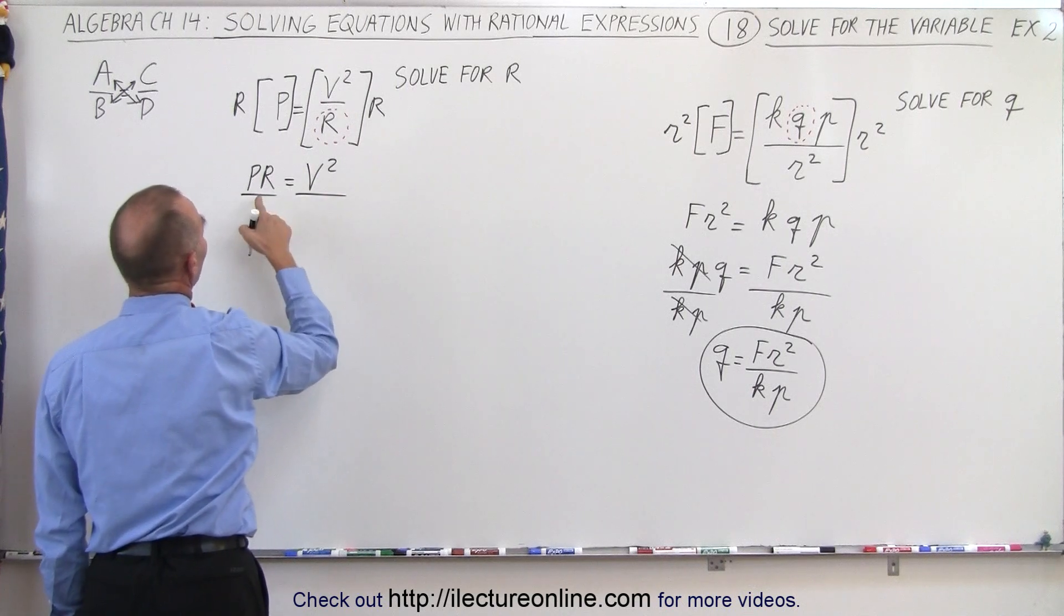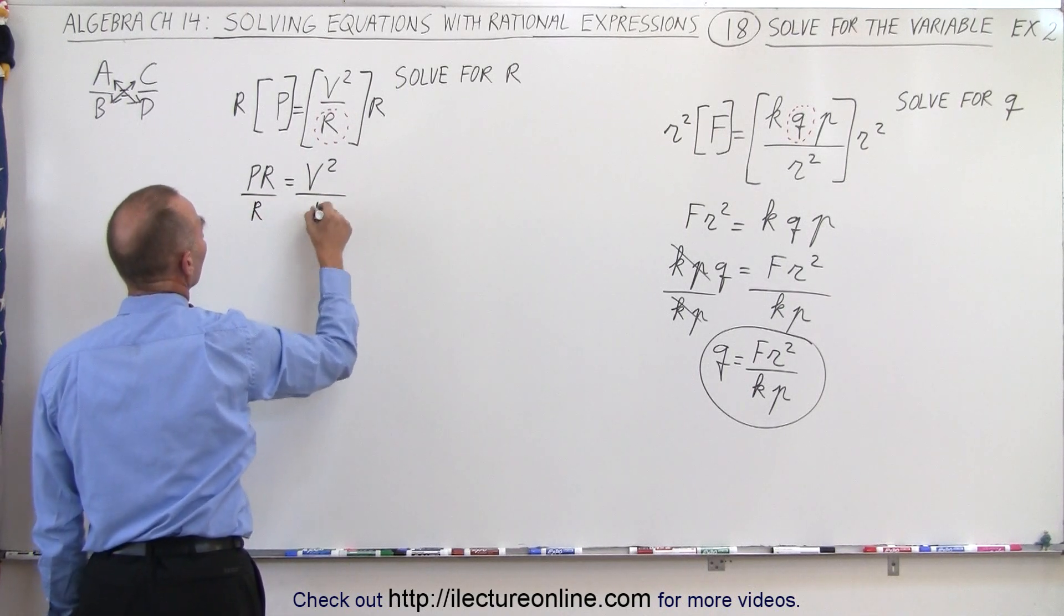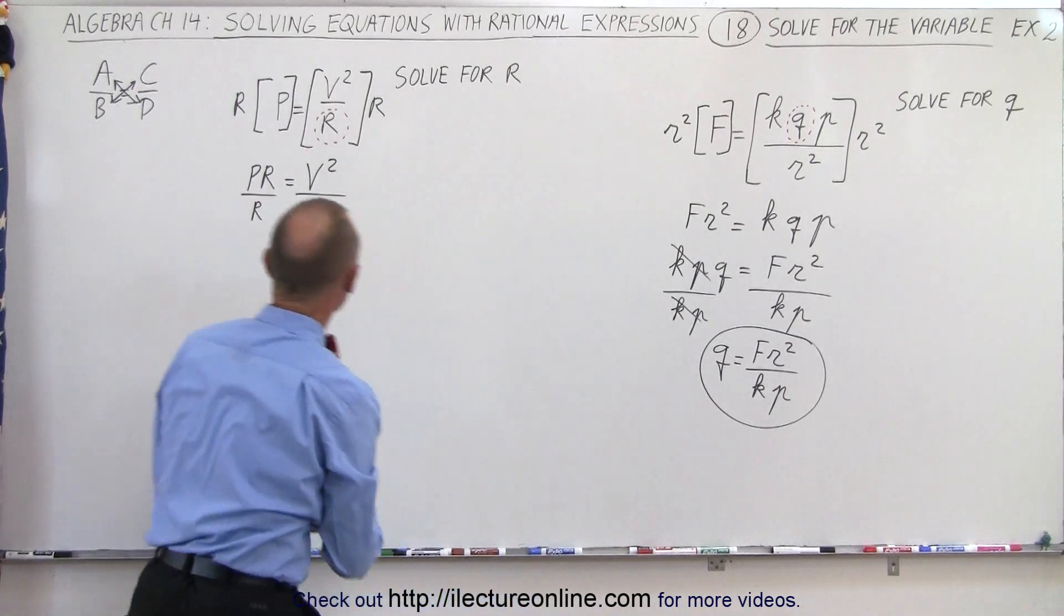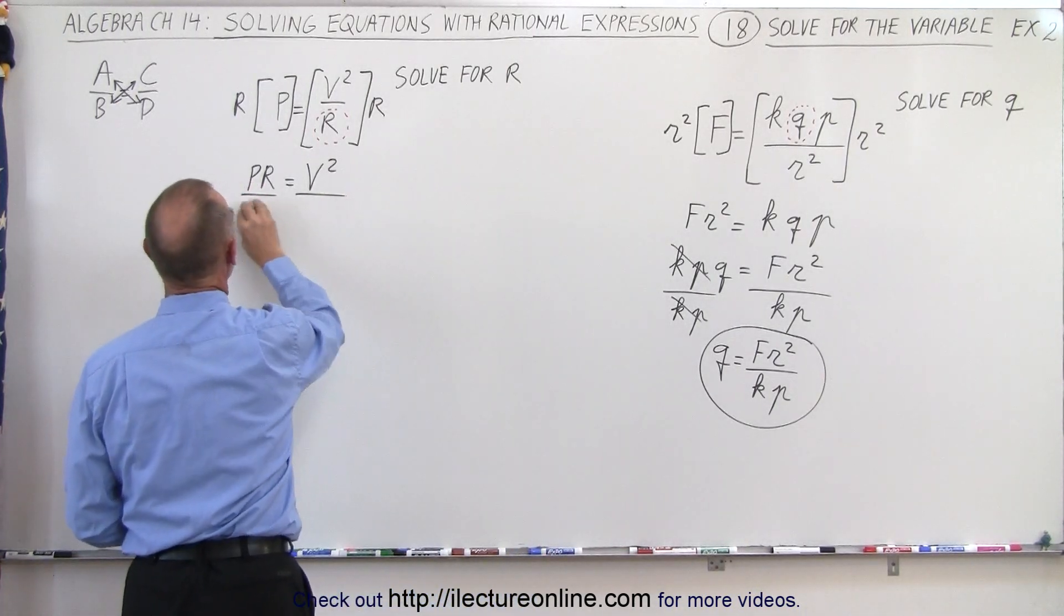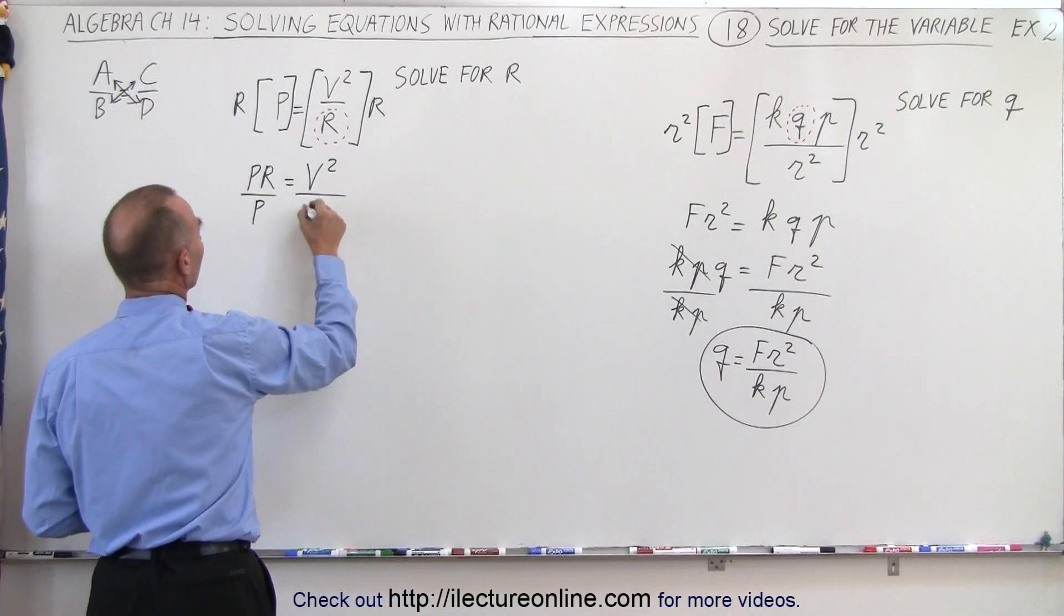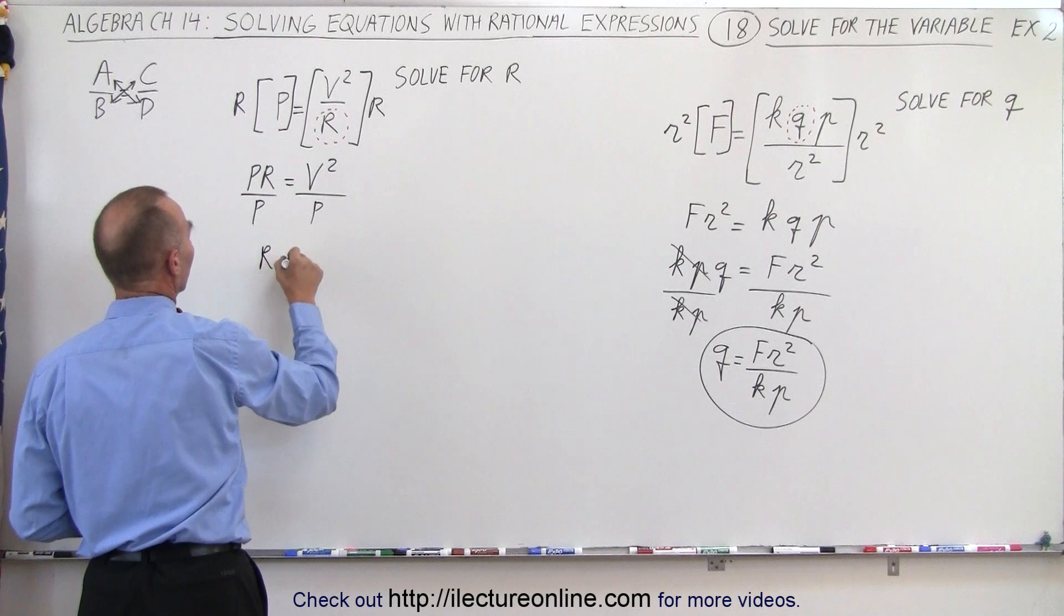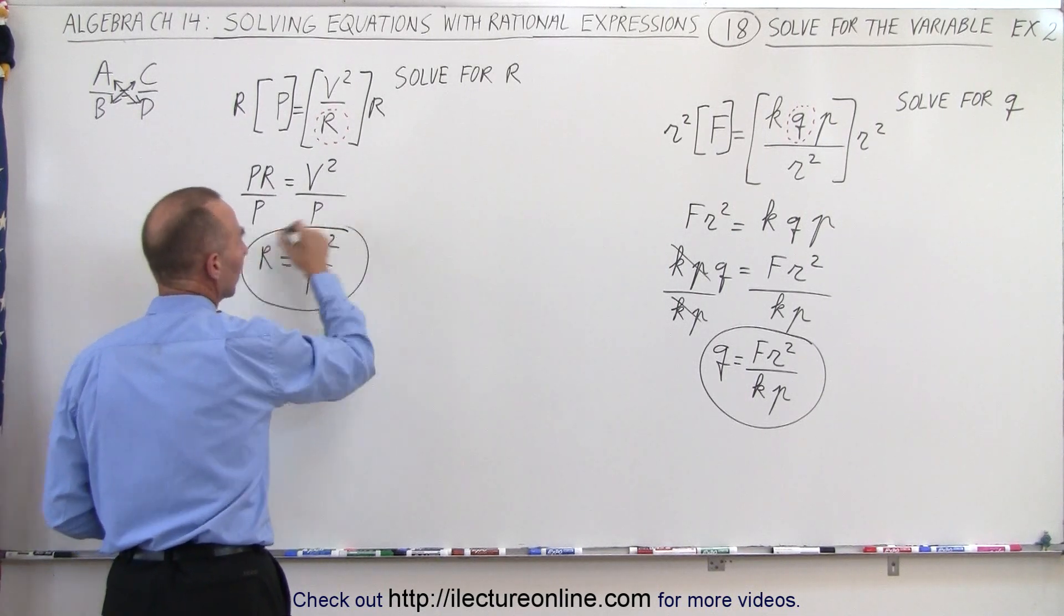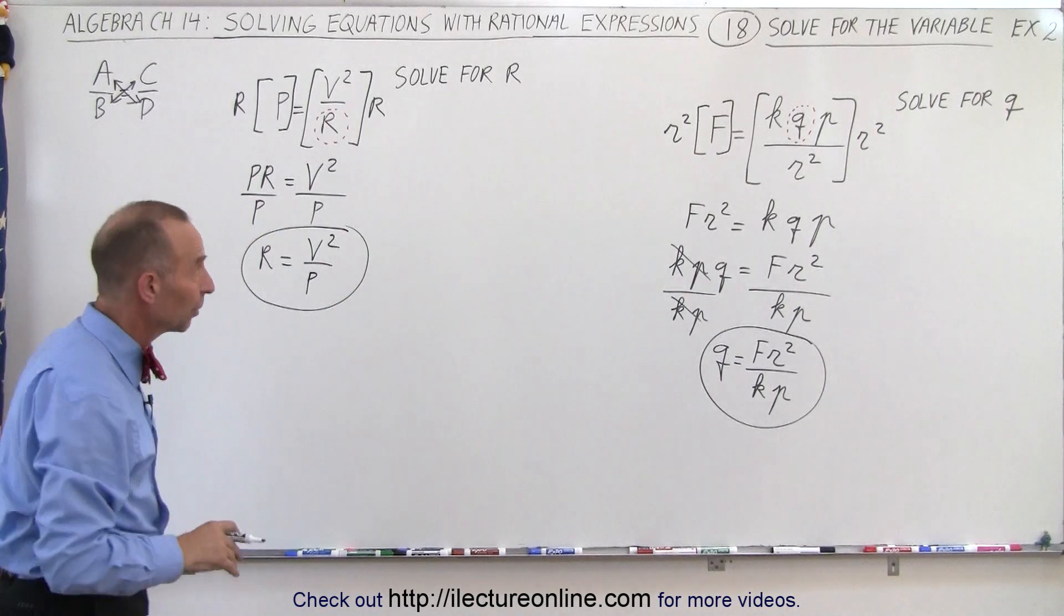And then I divide both sides by the coefficient. Actually, I have to keep track of which variable I was trying to solve for. I'm trying to solve for r, so I'm going to divide both sides by p. The p's cancel out, and I'm left with r is equal to v squared over p. So that's the standard method by which you can solve for a variable in such an equation.